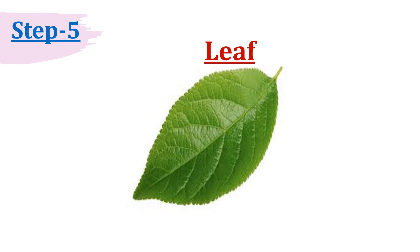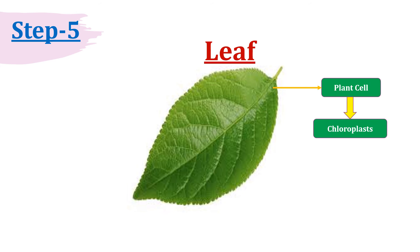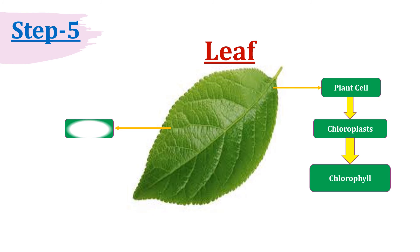Step 5 — we will understand leaf anatomy. Since the process happens in the leaf, we will understand what is inside the leaf and how it works. If we remove the outer part of the leaf, we find cells called plant cells. Inside the plant cell there is a chloroplast. Chloroplast contains chlorophyll, and chlorophyll's color is green — that is why the plant leaf is green. The plant also needs carbon dioxide as input. That carbon dioxide is taken in by the leaf through tiny pores under the outer covering of the leaf — small holes called stomata. Through stomata, carbon dioxide is taken in by the plant, and after food preparation, oxygen is released from the leaf.